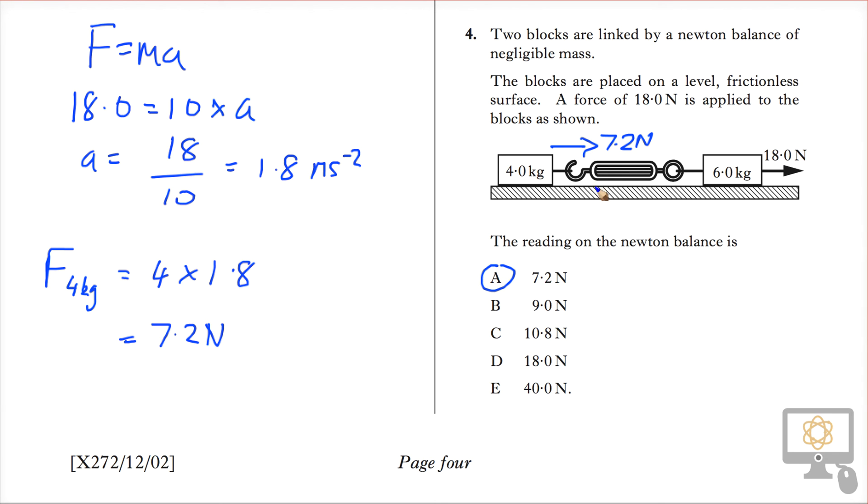And just to clarify that, that's also the force which is pulling back in this direction on the 6 kilogram mass. Because if we think about the 6 kilogram mass on its own, it's needing a force of its mass times its acceleration, which is 1.8 as well. And that's an unbalanced force of 10.8 newtons.